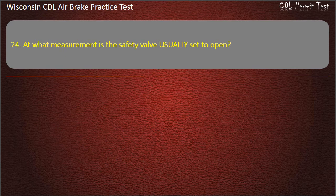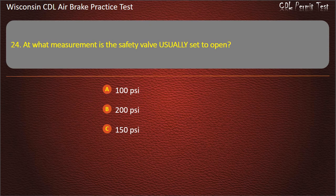Question 24. At what measurement is the safety valve usually set to open? 100 pounds per square inch. 200 pounds per square inch. 150 pounds per square inch. 250 pounds per square inch. Answer: 150 pounds per square inch.